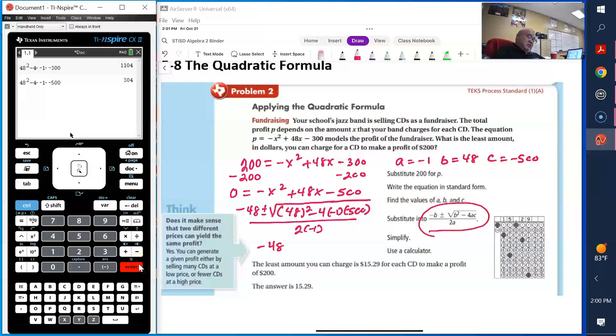And so what you get is 304. So I have negative 48 plus or minus the square root of 304 divided by 2 times negative 1, which is negative 2.